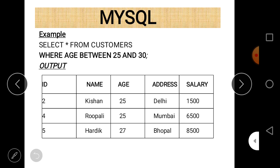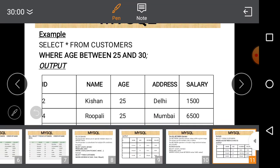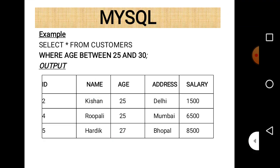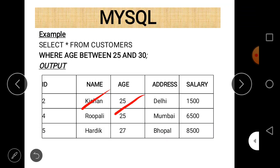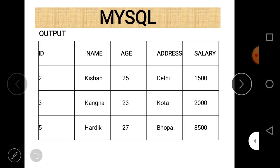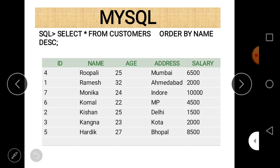You can see that the customer named Christian has age 25, so 25 is included in the result. If any customer had age 30, that would also be included. Checking the data in the customer table, no record with age 30 exists, which is why it is not printed in the output.